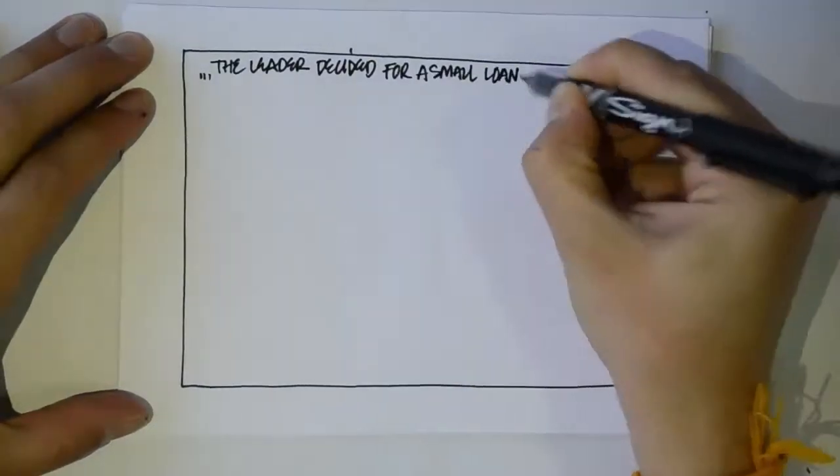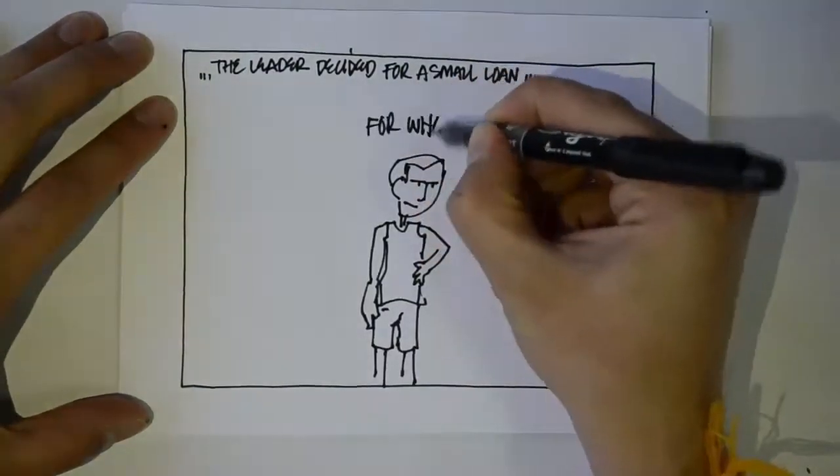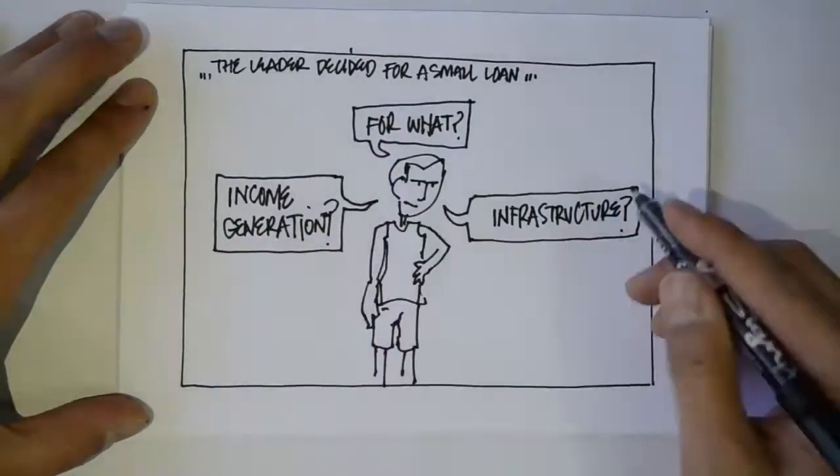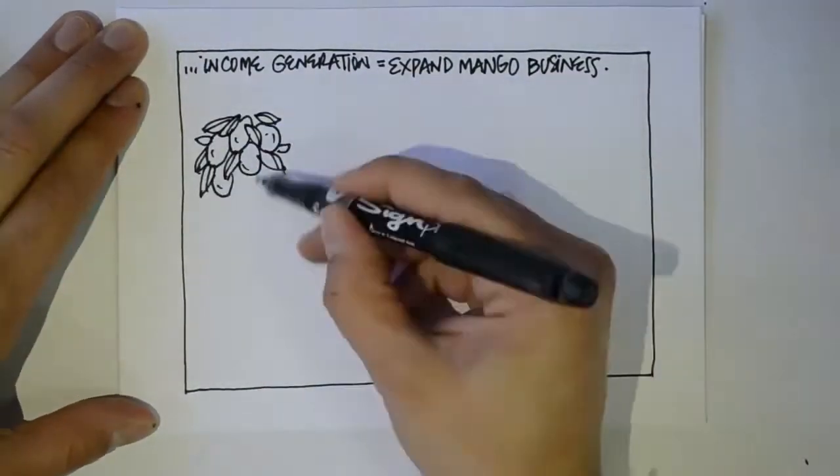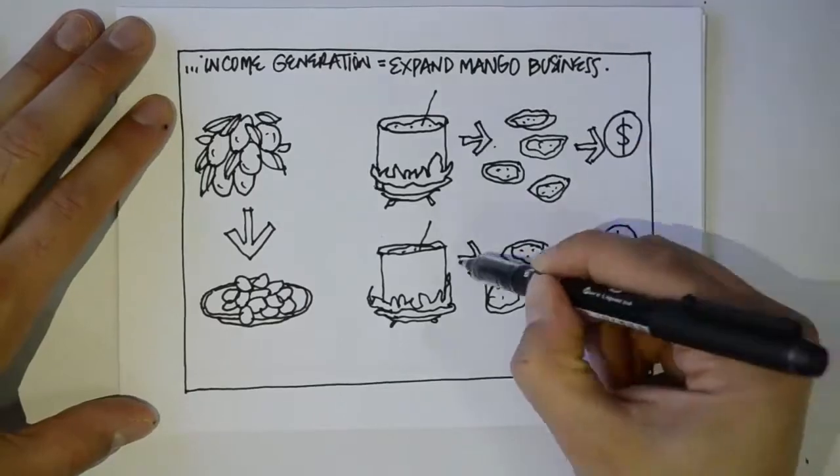The leader spoke with the community members and they decided to take a small loan. They had many options. They could either use the money for a small infrastructure project or for income generation. They also considered expanding their mango businesses to support their livelihoods and to generate more savings.